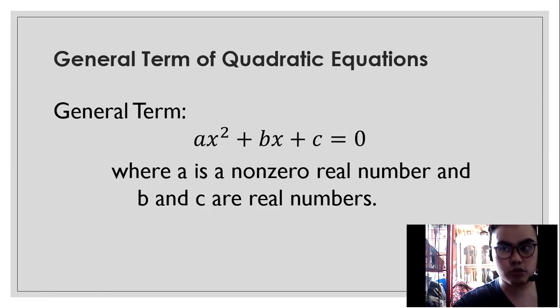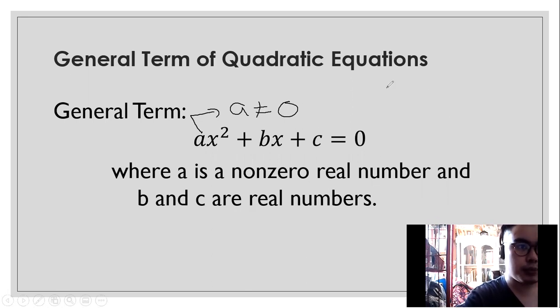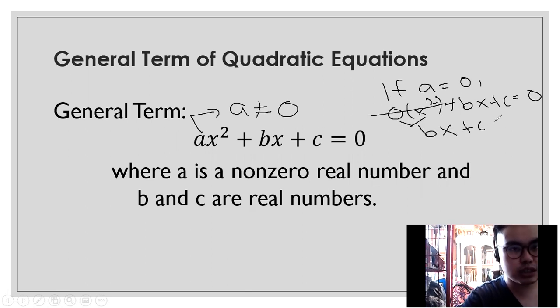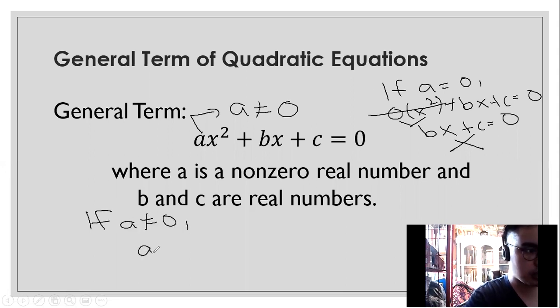However, your a should not be zero, otherwise it will be a linear equation. Why? Because if your a is equal to zero, then what will happen is zero times x squared plus bx plus c equals zero. So what will happen here? So goodbye na to. Then what will remain is bx plus c equals zero. So therefore, this is not a quadratic equation. However, if your a is not zero, we can assume that the term will be still ax squared plus bx plus c equals zero. So therefore, this can be called a quadratic equation.